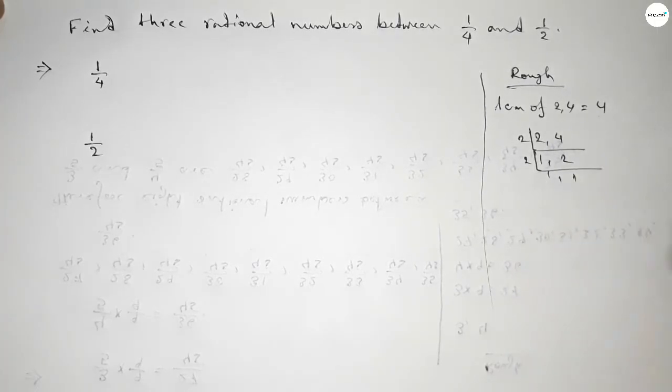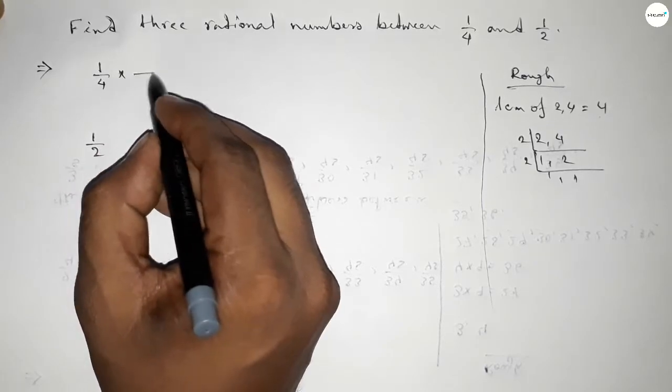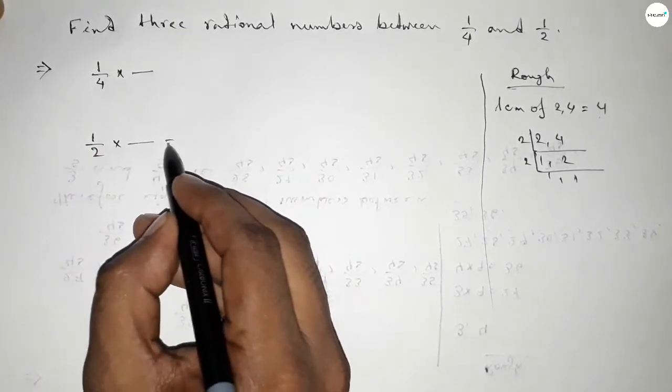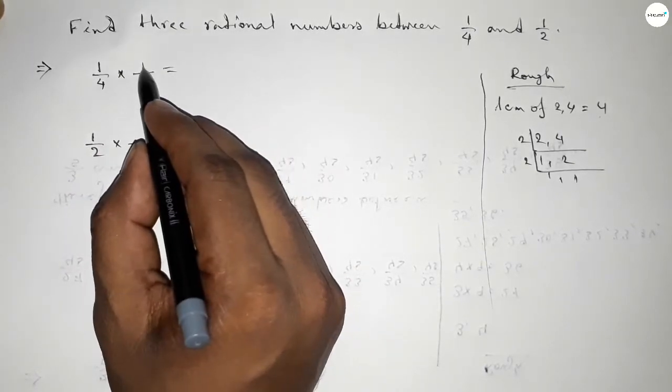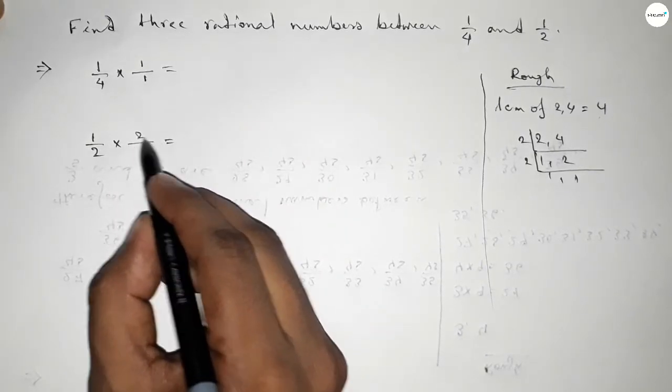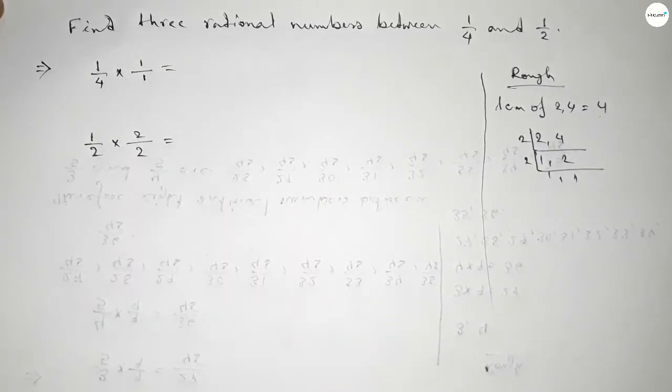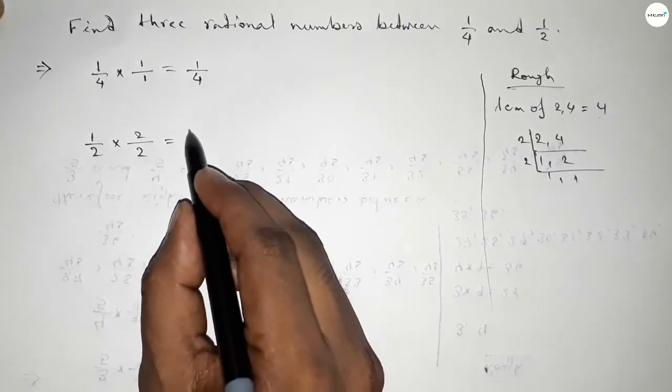Now what should we multiply here, up and down, to get denominator 4? If you put here 1 and 2, this is 1 over 4 and this is 2 over 4.